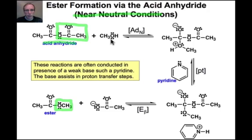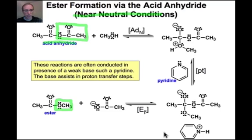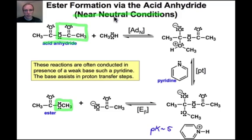The nucleophile is methanol, which isn't a very good nucleophile, and it reacts to make the carboxylic ester shown here. These reactions are often conducted in the presence of a weak base like pyridine, whose structure is shown here. The pKa of pyridine's conjugate acid is roughly 5, so it's going to essentially buffer the reaction to approximately neutral pH.